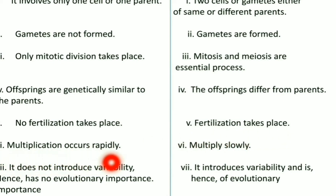Multiplication occurs rapidly in asexual reproduction, whereas in sexual reproduction organisms multiply slowly. Asexual reproduction does not introduce variability, hence has no evolutionary importance, whereas sexual reproduction introduces variability and is of evolutionary importance. Offsprings are often formed in large numbers in asexual reproduction, whereas in sexual reproduction offsprings are produced in less number.